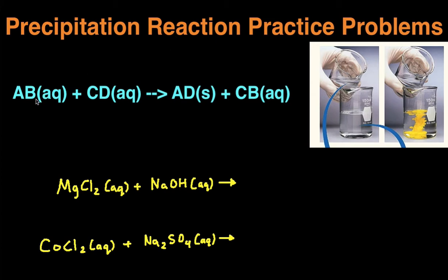Precipitation reaction is when you have two soluble ionic compounds reacting to form a solid, which we call the precipitate, and then another soluble ionic compound. So you can see here, there's two solutions.